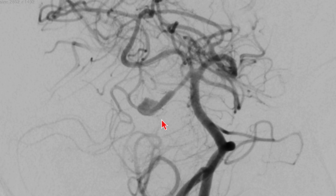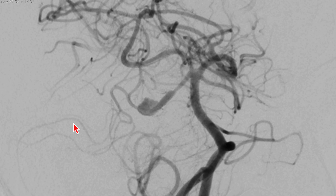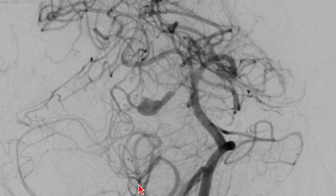We planned to occlude this aneurysm segment, bringing the coil proximally up to the dilated segment, so that the perforators from the proximal superior cerebellar artery are uncompromised. We believed that the cortical branches of the right superior cerebellar artery would be reformed by the PICA-superior cerebellar artery cortical anastomosis.